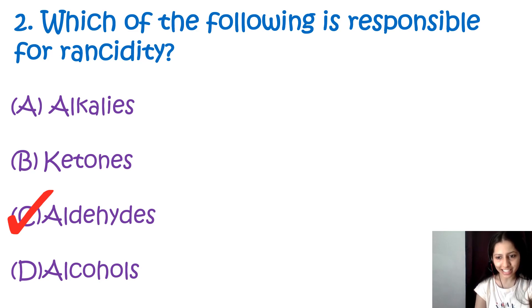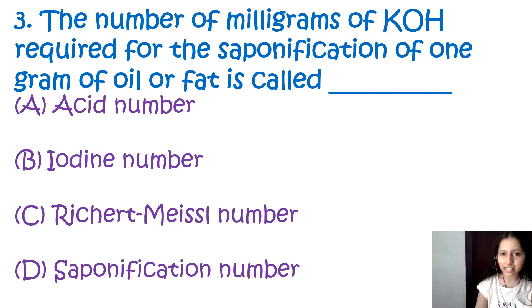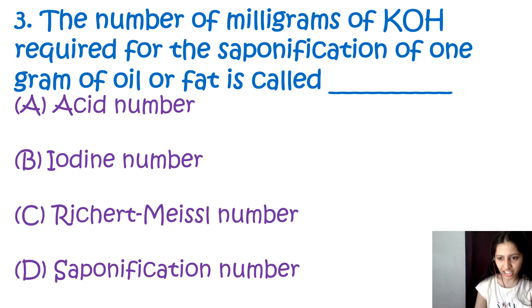Question number 3: The number of milligrams of KOH required for the saponification of 1 gram of oil and fat is called — acid number, iodine number, Reichert-Meissl number, or saponification number. The correct answer is D, saponification number. The number of milligrams of potassium hydroxide required for the saponification of 1 gram of oil and fat is known as the saponification number. This definition is quite important.